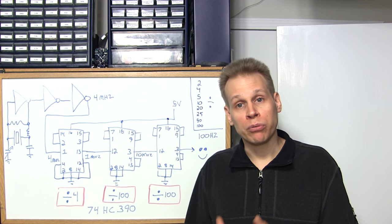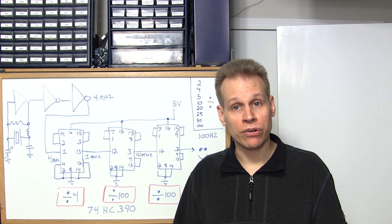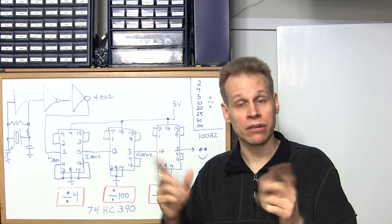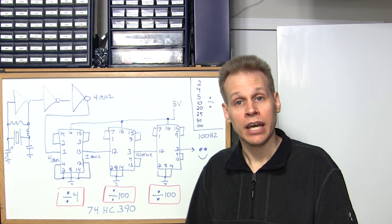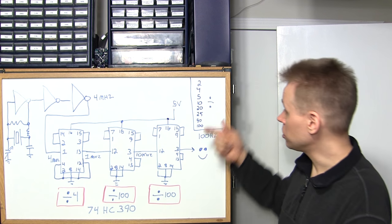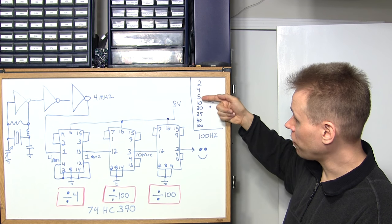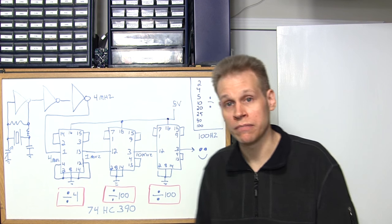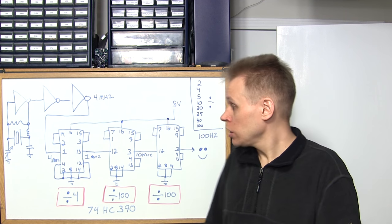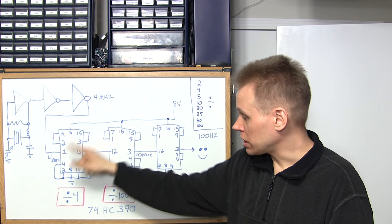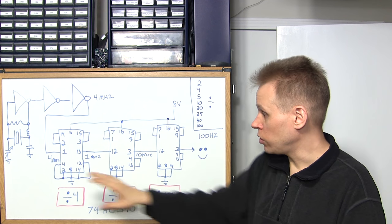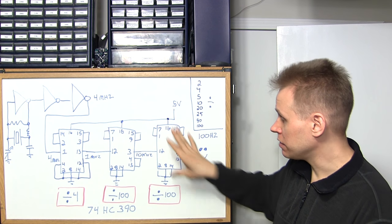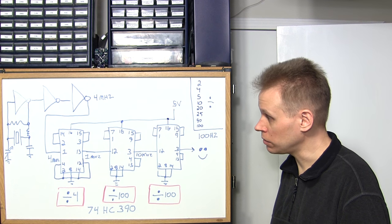You don't need to program this IC with a computer or anything. You simply program it by just connecting different pins together on the outside of the IC. You can configure this IC to divide by 2, 4, 5, 10, 20, 25, 50 or 100. The way I have the pins hooked together on these ICs will make this divide by 4, divide by 100 and then again divide by 100 to give me 100 hertz out.